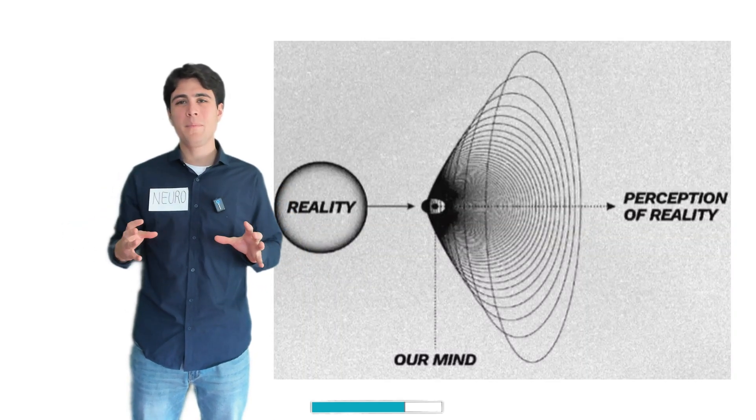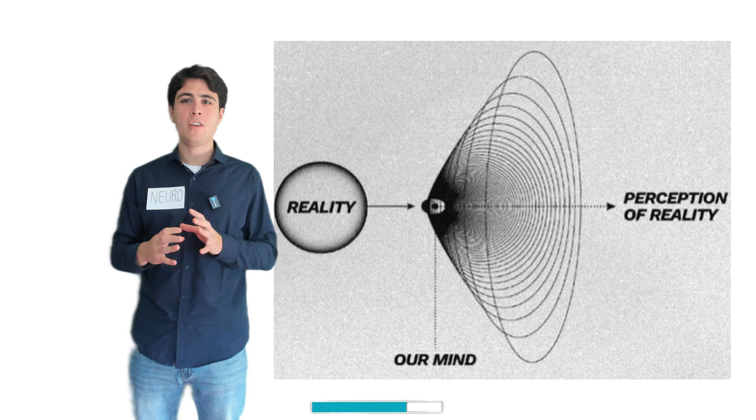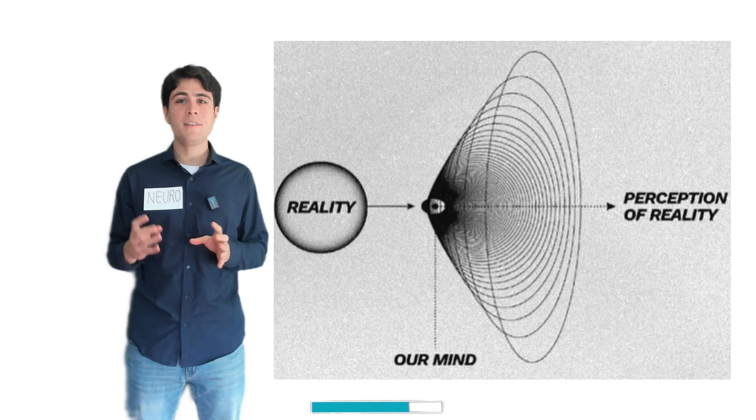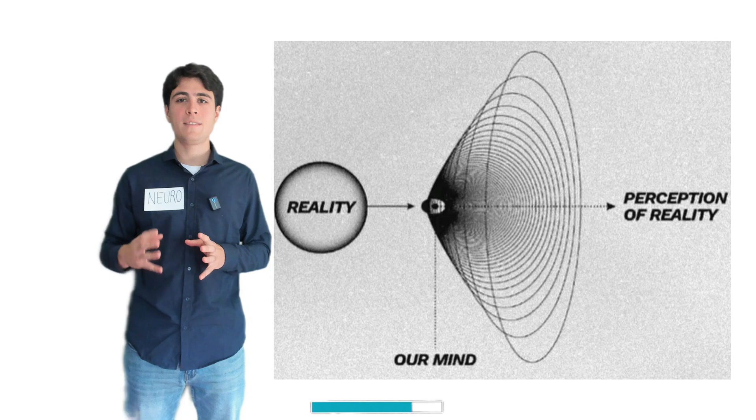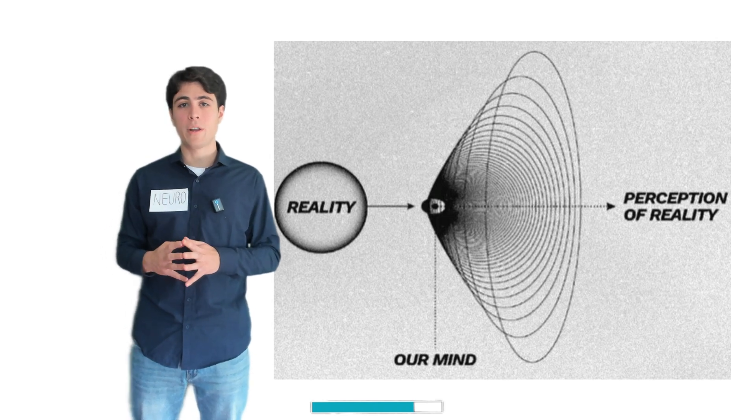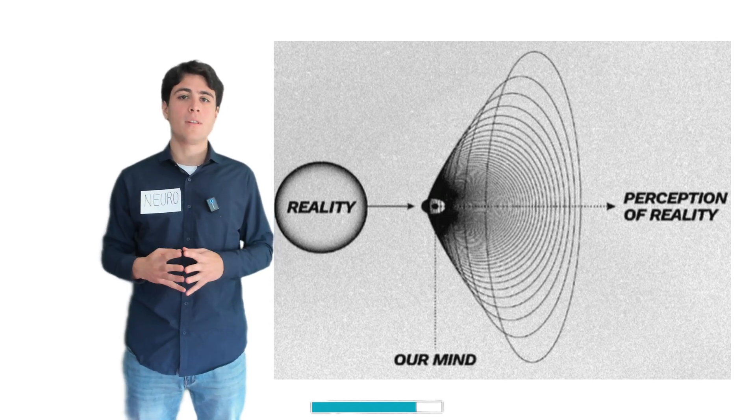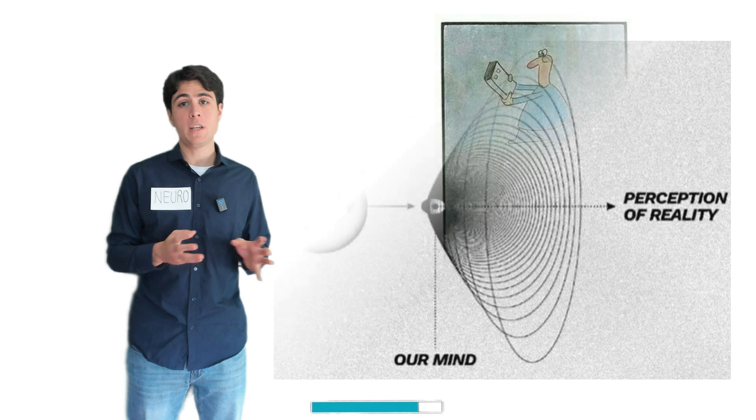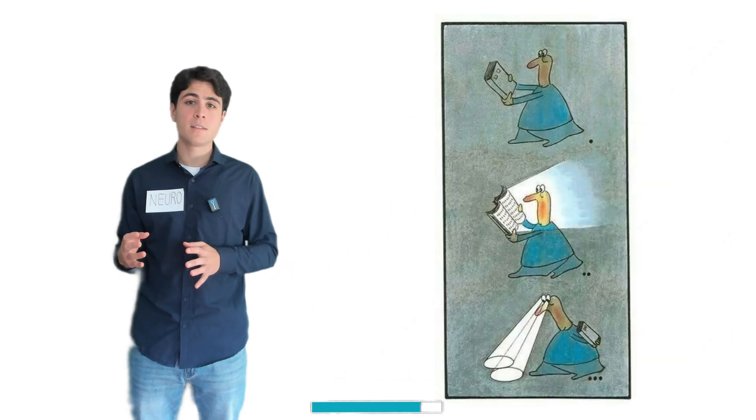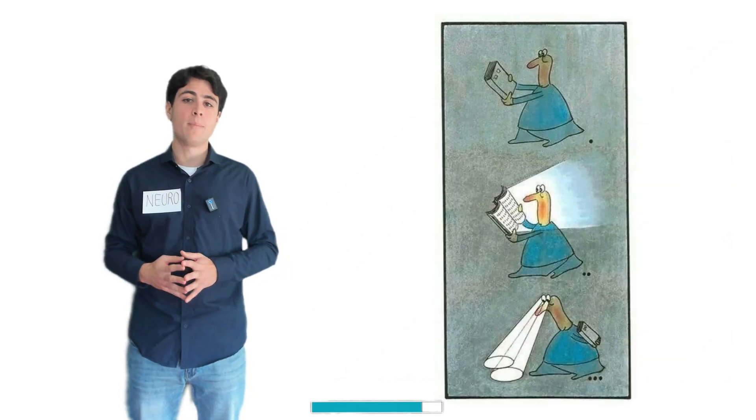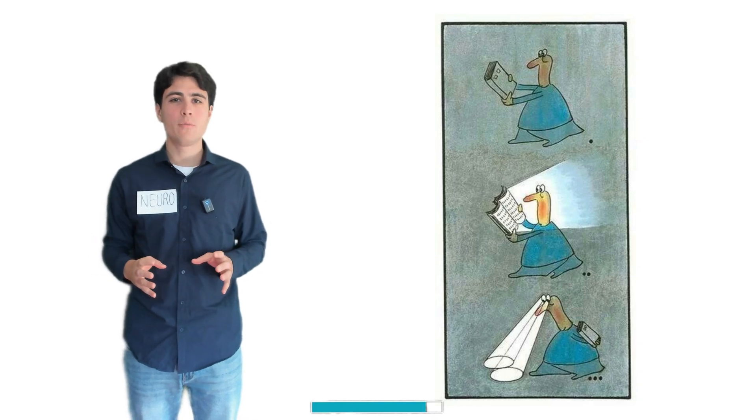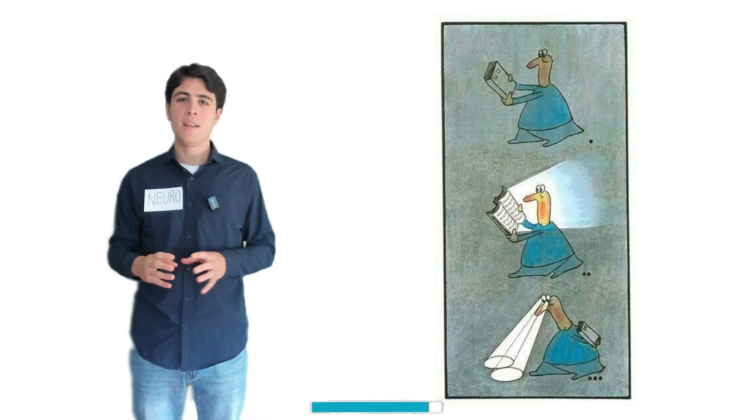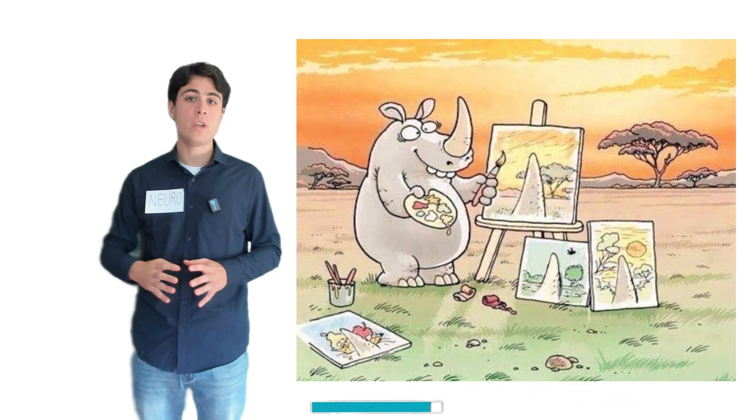Now, what does this all mean? Well, it means that the reality we experience isn't necessarily the one that's out there. Instead, it's a simulation created by our brain, an internal model that's shaped by what we've seen before, what we expect, and even our personal biases. Our perception is not an objective window into the world. It is a subjective reconstruction.